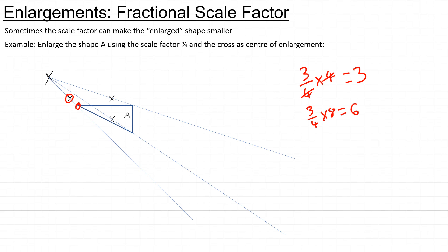And then normally we would go down by four, but three-quarters of four is just three, so I go down by three. And then I join up my points and I have my enlarged shape.